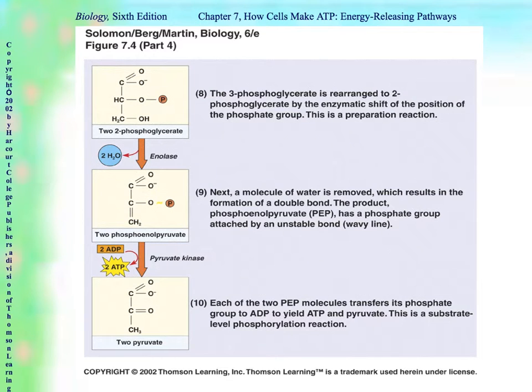And finally, with all of this, we finally, at the end, have two pyruvates. This is the structure of pyruvate right there. That's what it looks like.